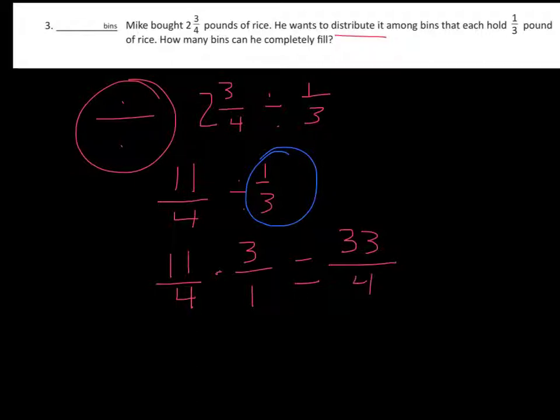Now we have an improper fraction we want to turn into a mixed number, and that gives us eight and one fourth. Now going back to our problem, it says how many bins can he completely fill? Completely he can only fill eight bins. He has an extra bin that's one fourth of the way full, but he can only fill eight bins, so our answer would be eight.